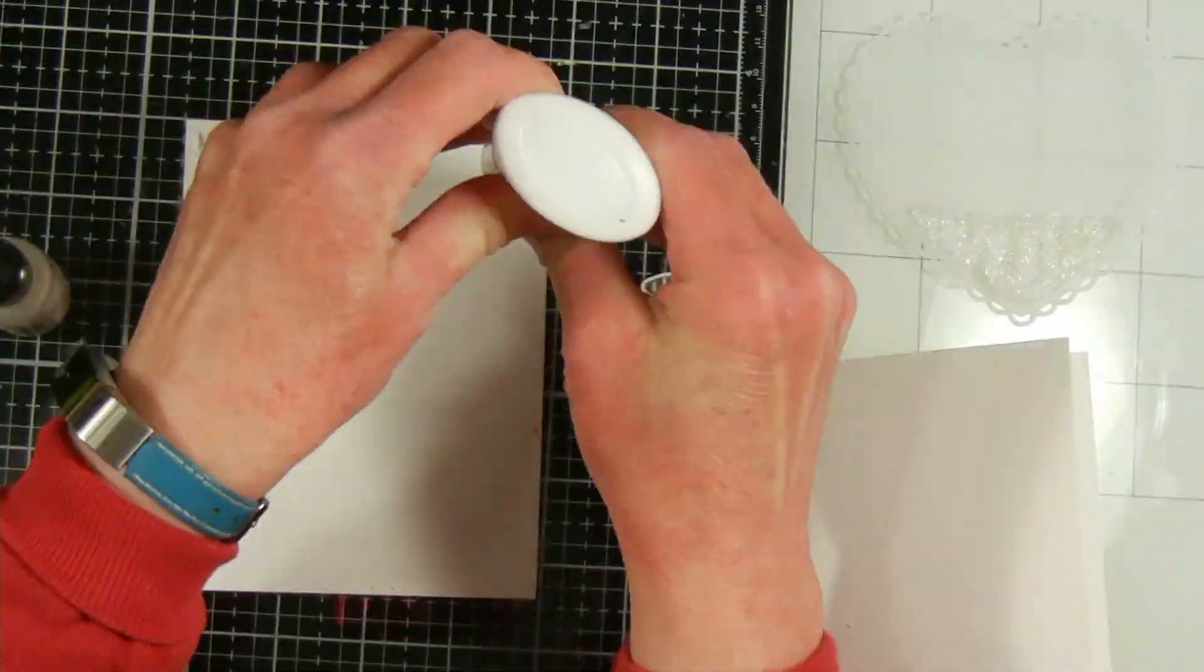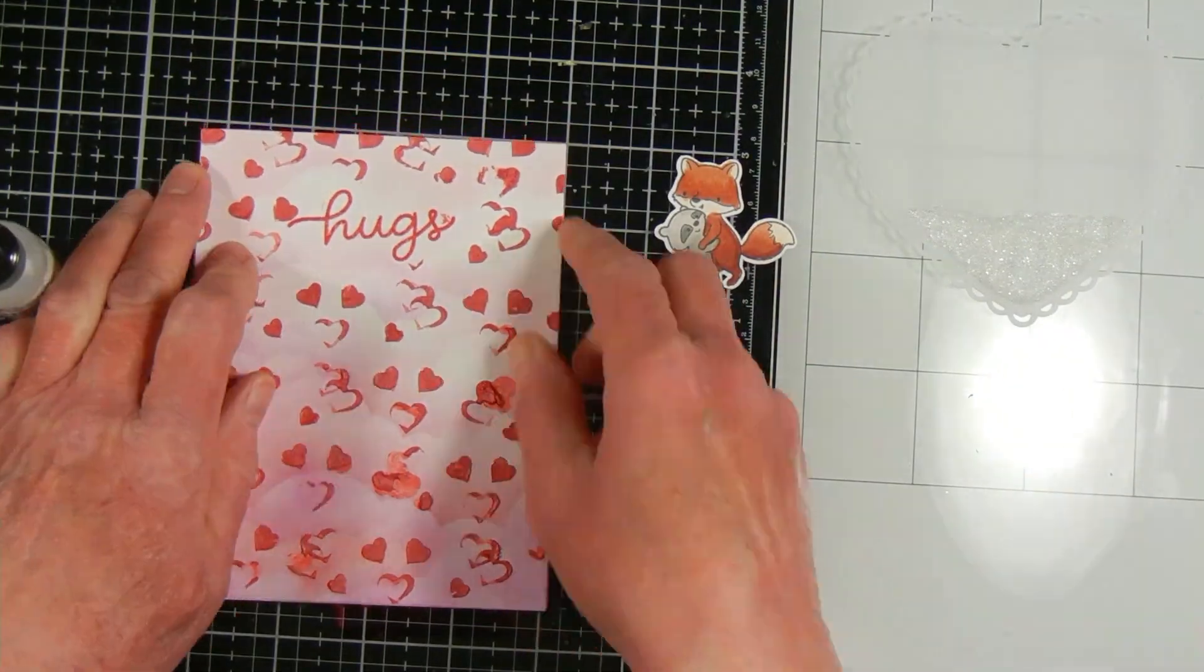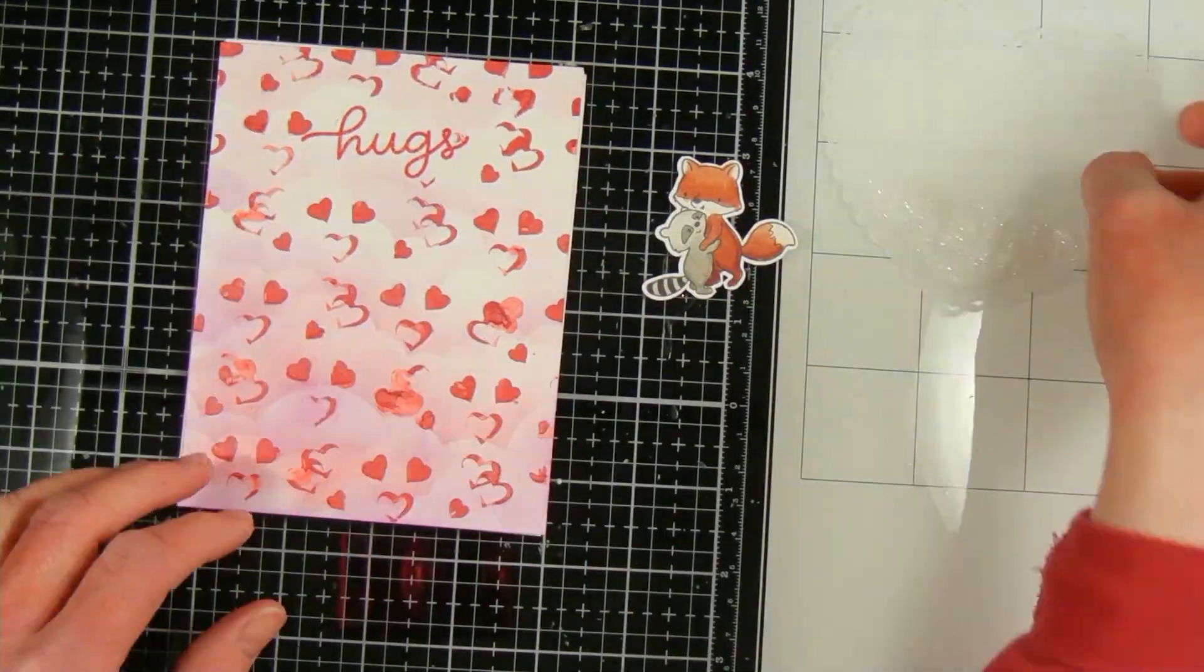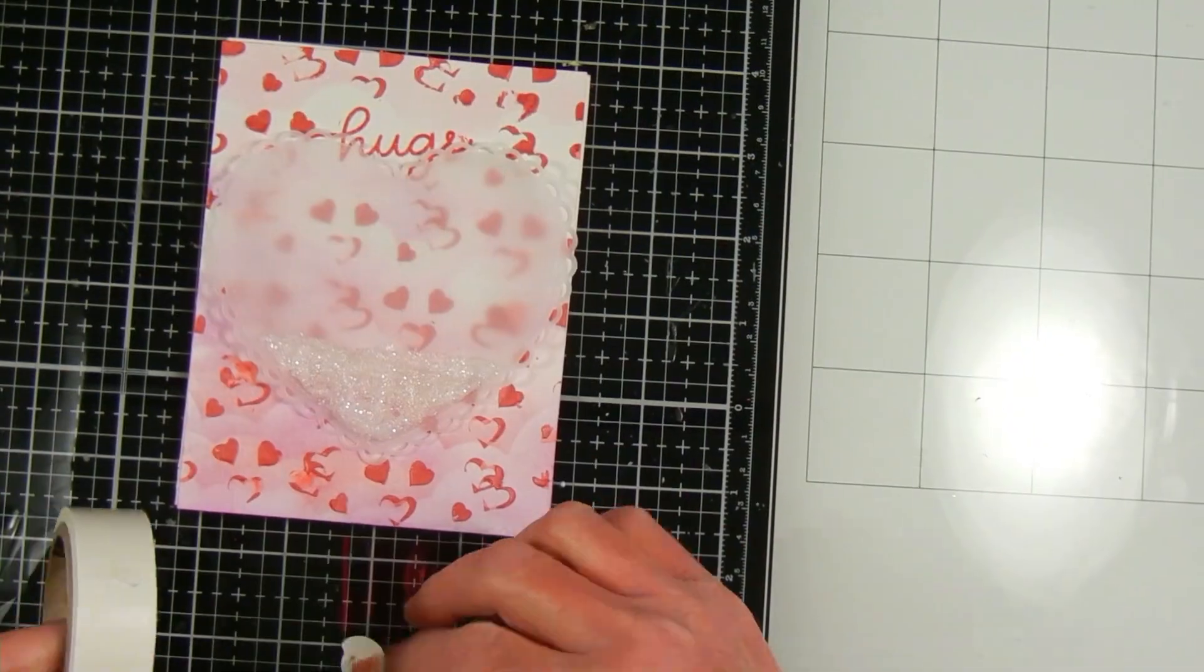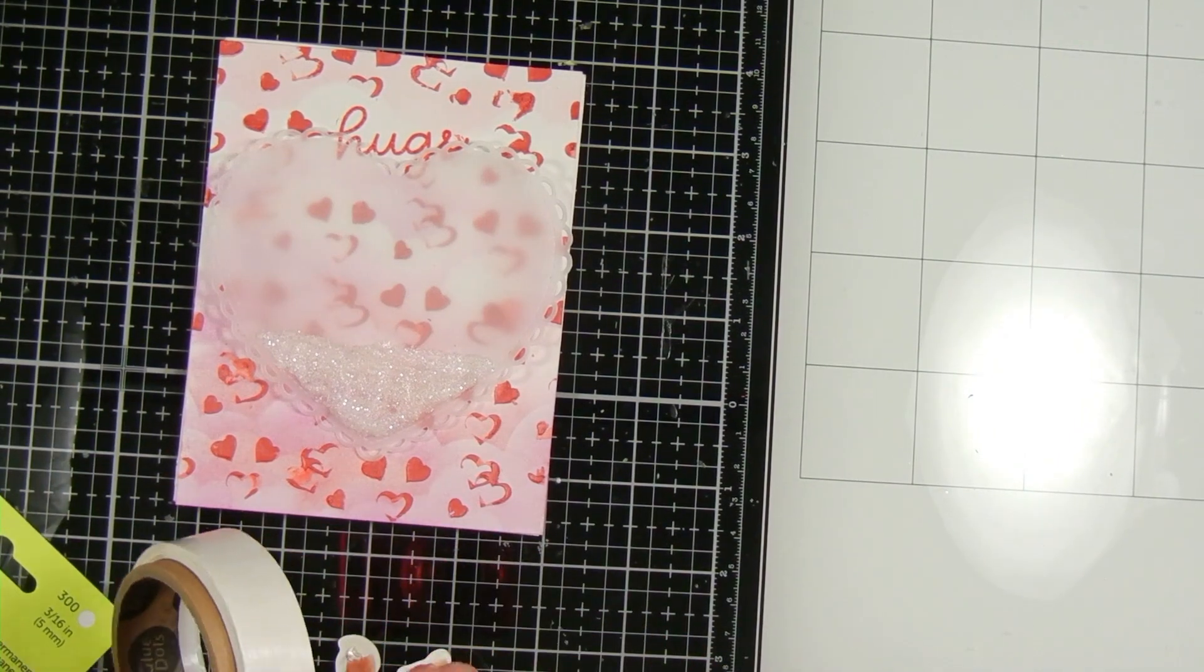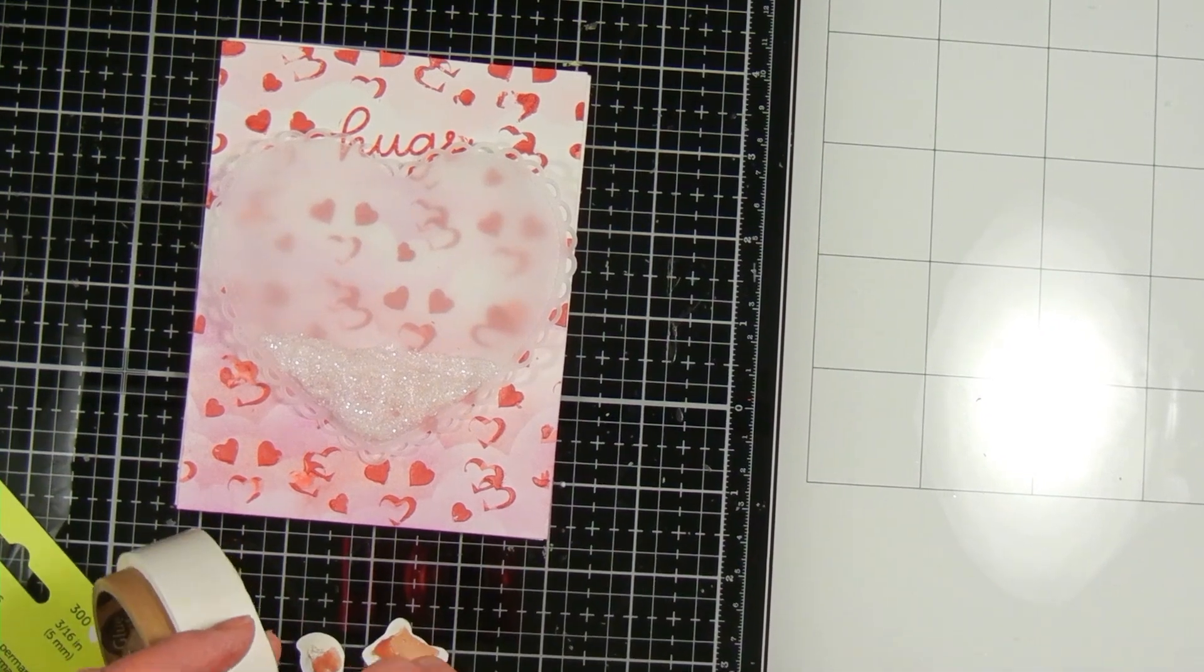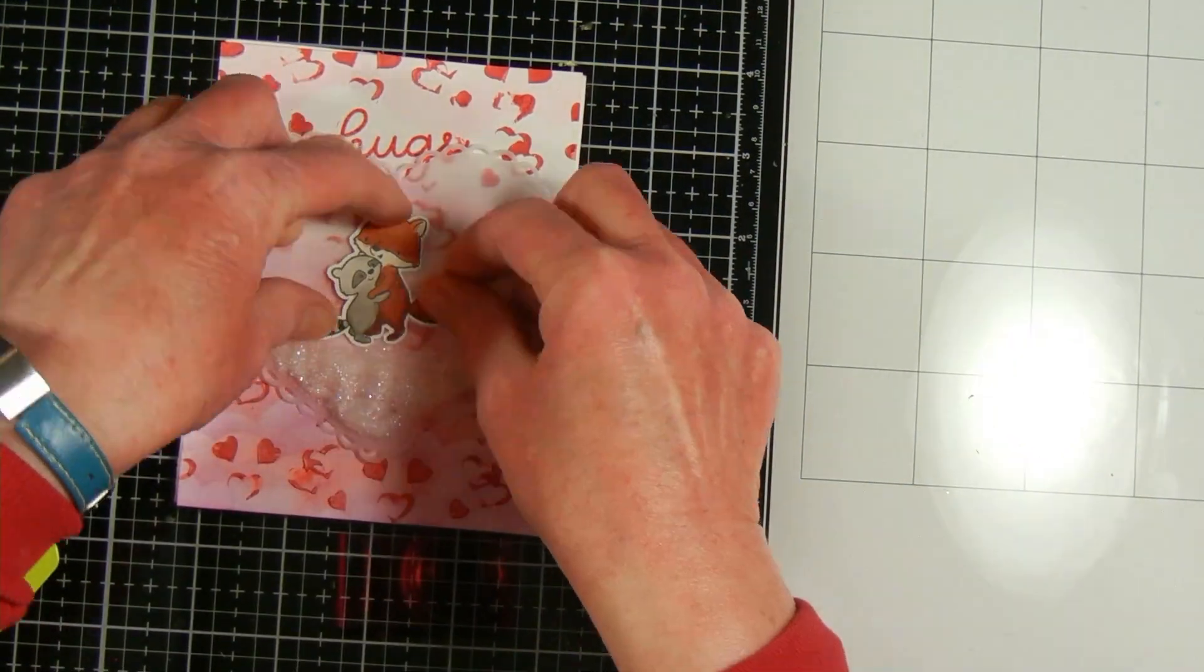Now I'm just taking some Nuvo Deluxe glue to put on the back of my panel that I already created and put it on the front of my card base. I'm attaching my stamped image with some glue dots. I figured that would raise it up a little bit. In hindsight I think maybe I should have used foam squares because I do have some of those.